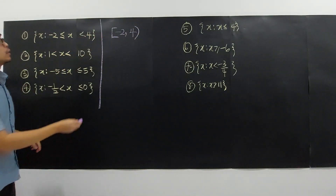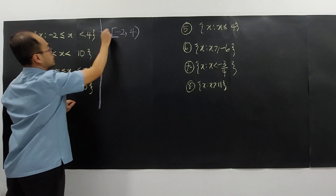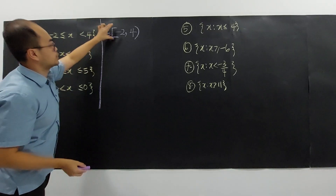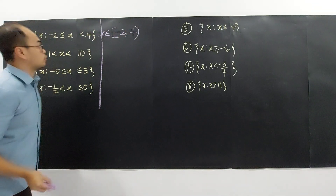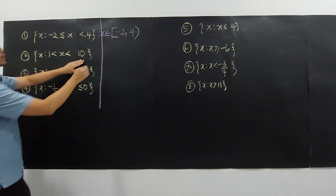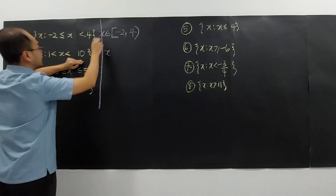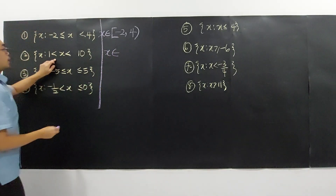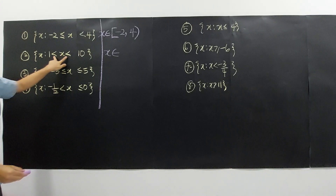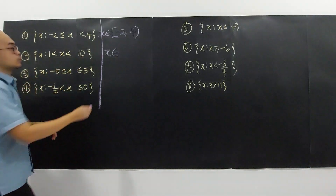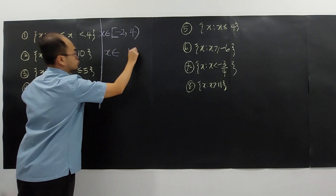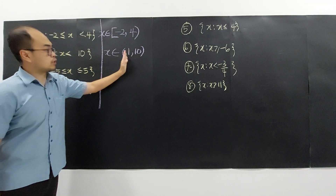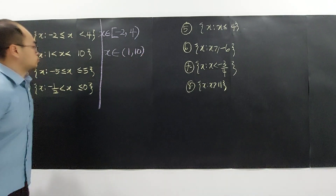This is another form of writing the set — we can say X is an element of this interval. For example, if 1 and 10 are both not included, we write X as an element of the interval from 1 to 10 with open brackets on both sides, meaning neither 1 nor 10 is included.